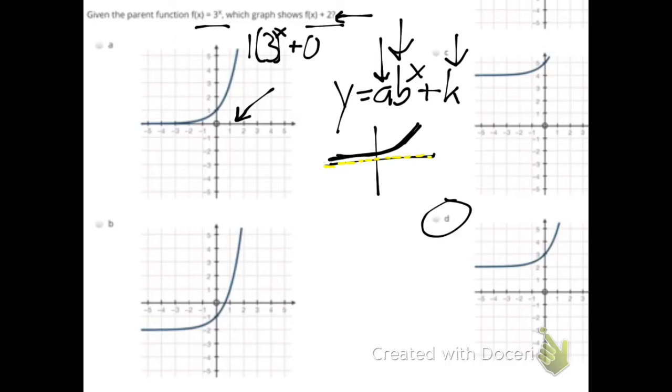And when your a value is one, that one really says like how far away from the asymptote you're going. So because the asymptote started at two, you went up one from that asymptote. And that shows that starting place for your graph on your y axis.